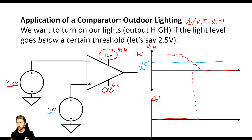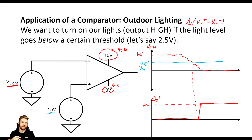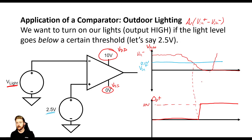The output stays at 0 volts until we reach the point where our light sensor drops below the 2.5-volt threshold. Because it's below this threshold, we know it's getting darker outside and we want our lights to turn on — and that is exactly what happens. At that point, our output goes up and stays there, hitting 10 volts because that is our VDD. Once that light signal goes back up, the lights turn back off because we don't want them on if it's light outside. Our output would go back to zero.